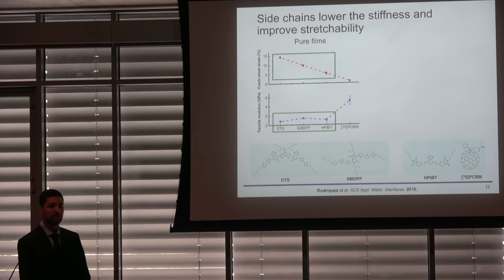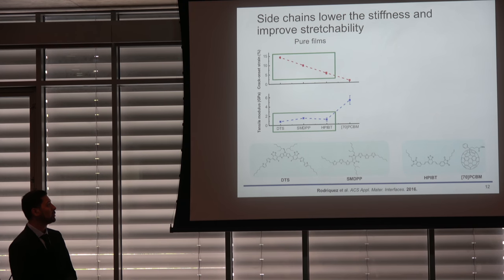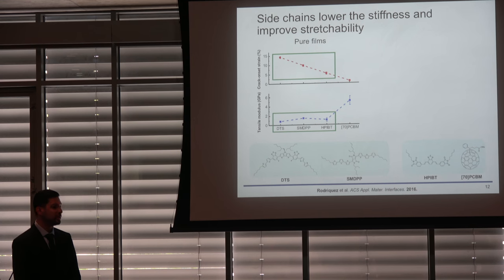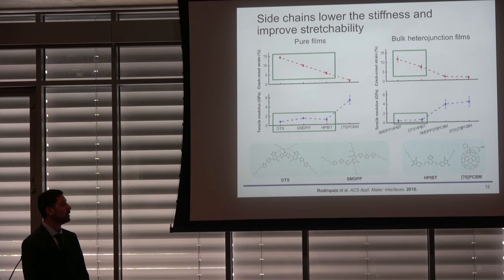We believe this improved stretchability occurs because the side chains push the conjugated cores apart, leading to lower van der Waals cohesion between molecules, resulting in a lower elastic modulus and more stretchable films. These would be good candidates for stretchable transistors. We also tested their mechanical properties as solar cell blends, mixing donors and acceptors together, and found that mixtures with HPIBT—the small molecule acceptor with side chains—had the lowest tensile modulus, up to four times lower than PCBM blends, and were the most stretchable at up to 10 and 5% respectively.